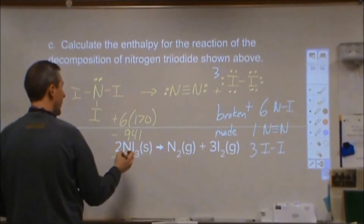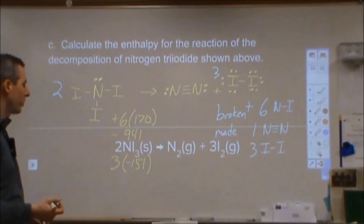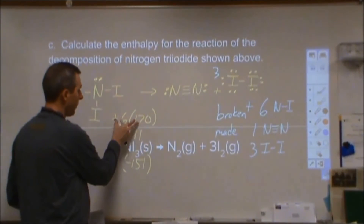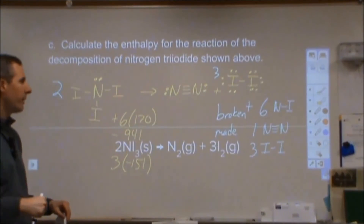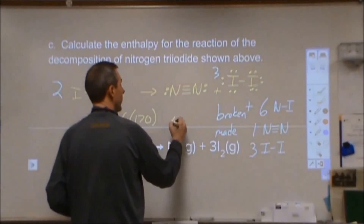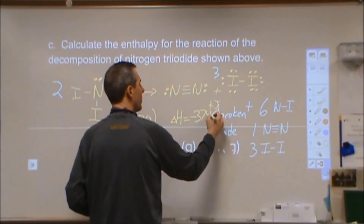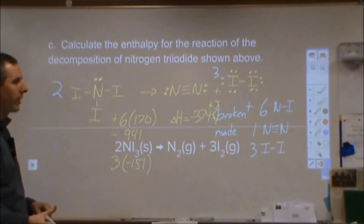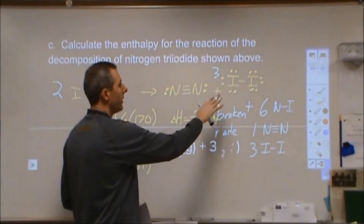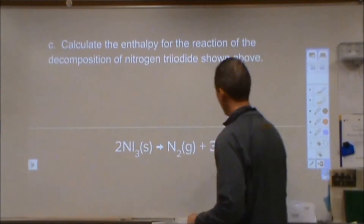For our three I₂ molecules: 3 × (negative 151). Bond formation is exothermic — we release energy as those atoms come together. Bond breaking requires us to supply energy, working against the bond force. When we total all of those values together, we end up with a total ΔH for the reaction of negative 374 kilojoules. The rule is: every bond broken is positive, every bond made is negative — total them all up.